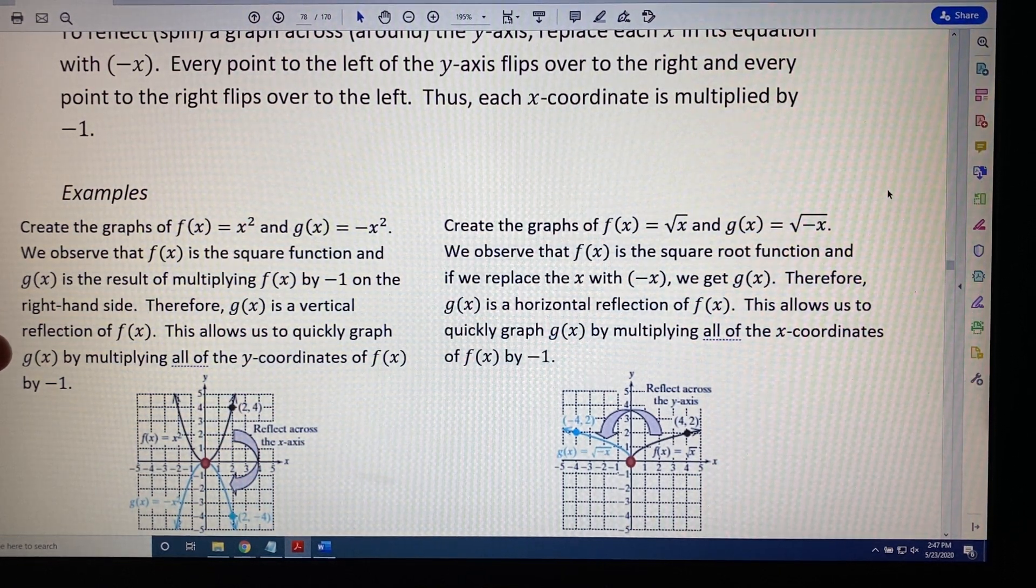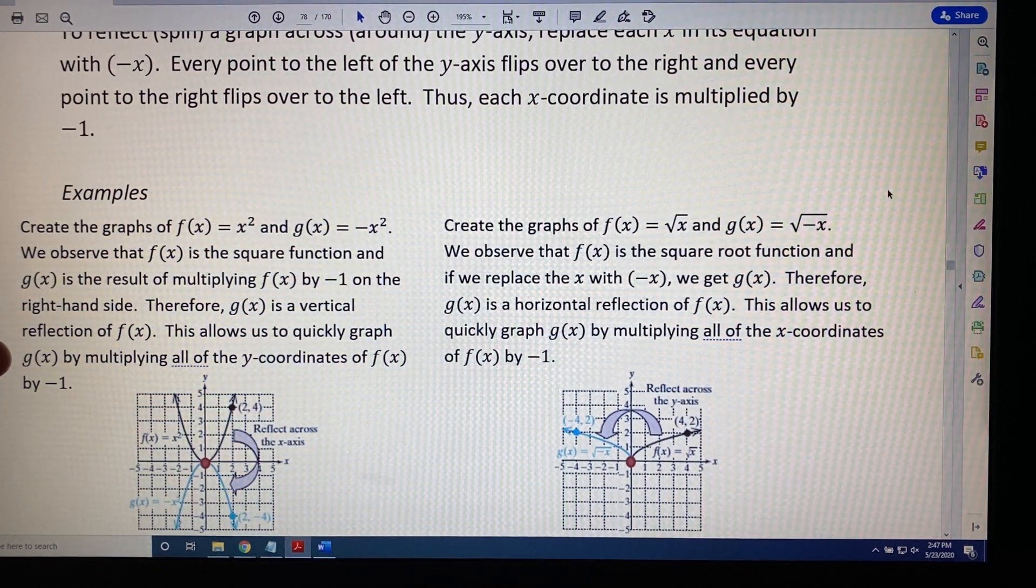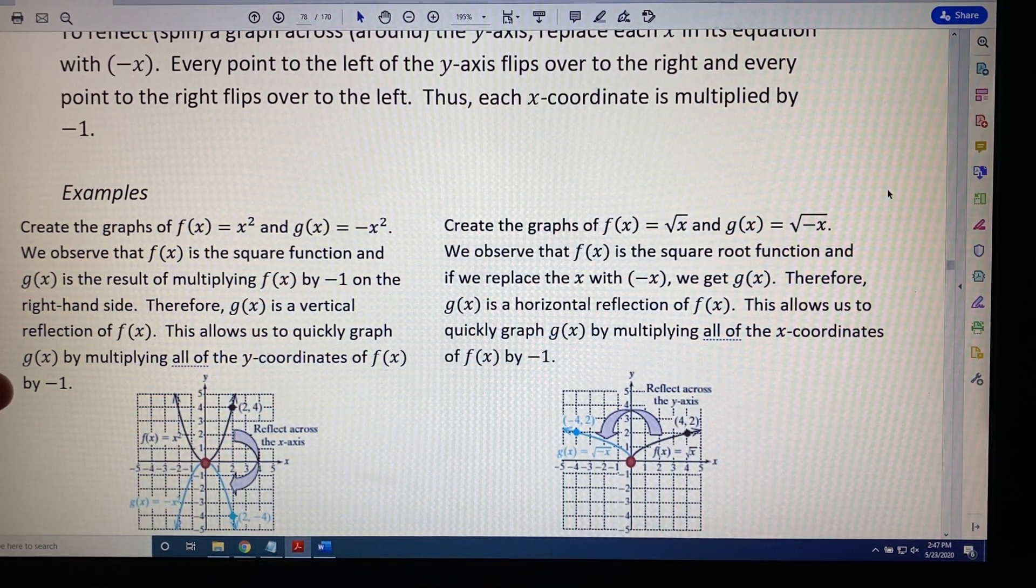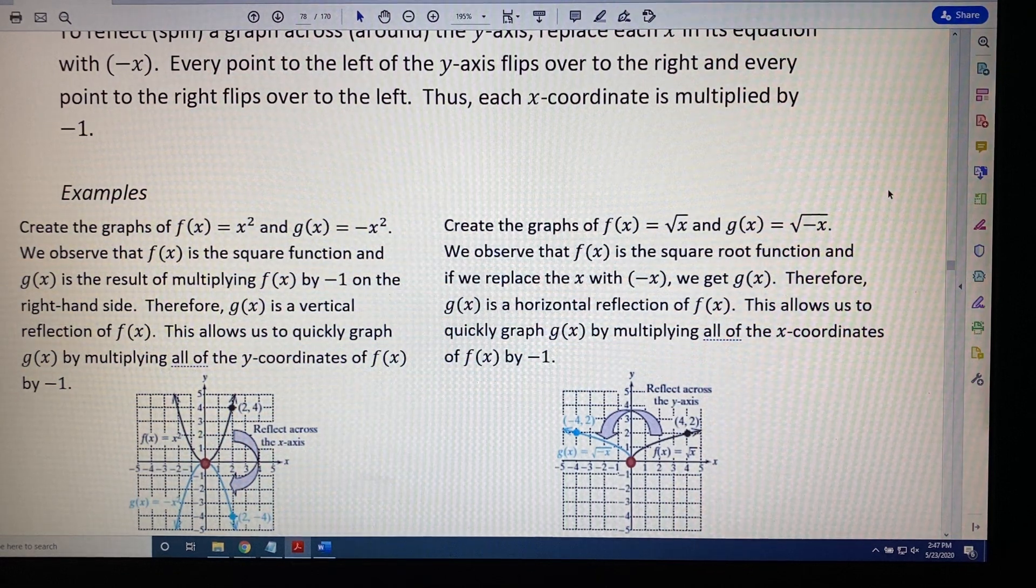This allows us to quickly graph g(x) by multiplying all of the y-coordinates of f(x) by negative one. Let's look at the diagram. The black curve here is the parent function f(x) = x².